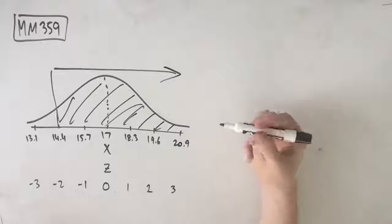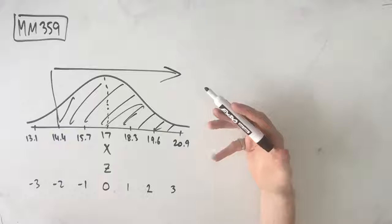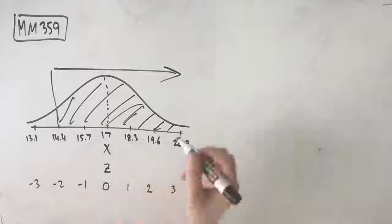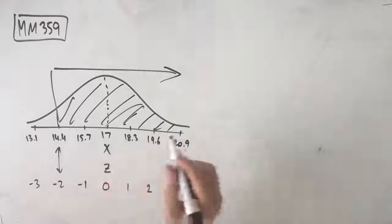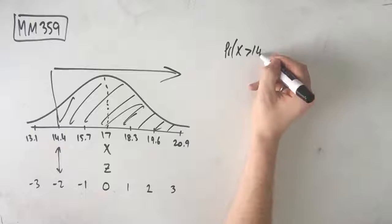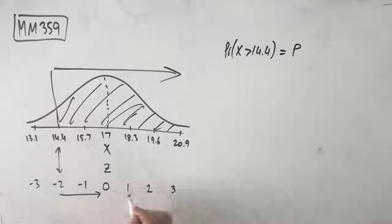Now we need to look through our answers and see if we basically have what we're looking for. So we know that our z value is negative 2 at 14.4, because these correspond to each other. So that means that the probability that x is greater than 14.4 is equal to the probability that z is greater than negative 2.